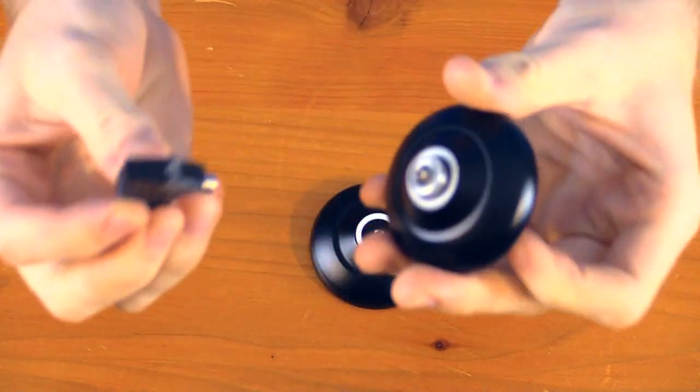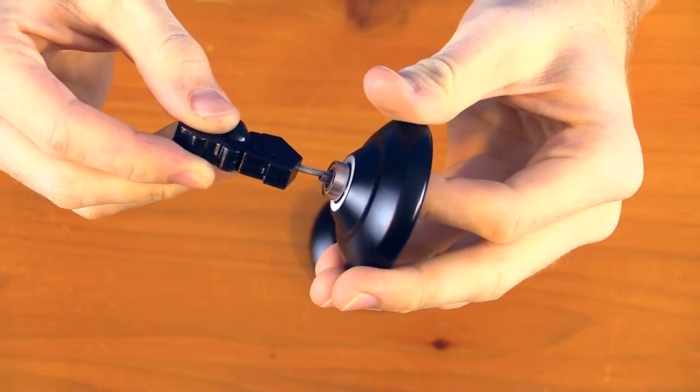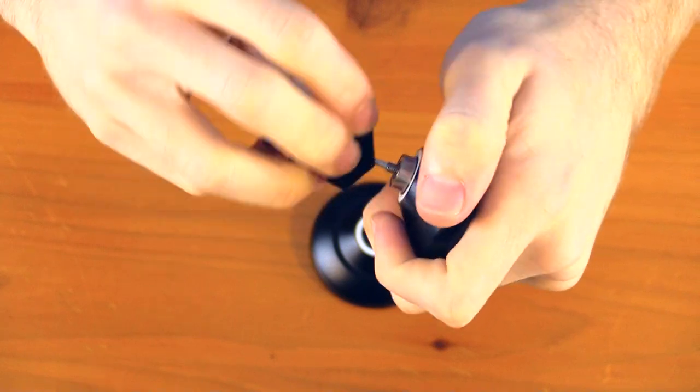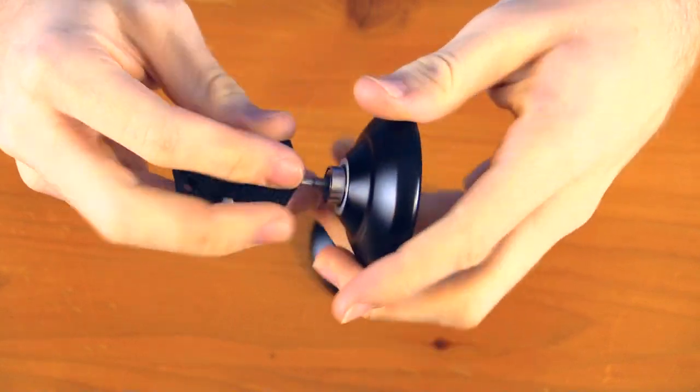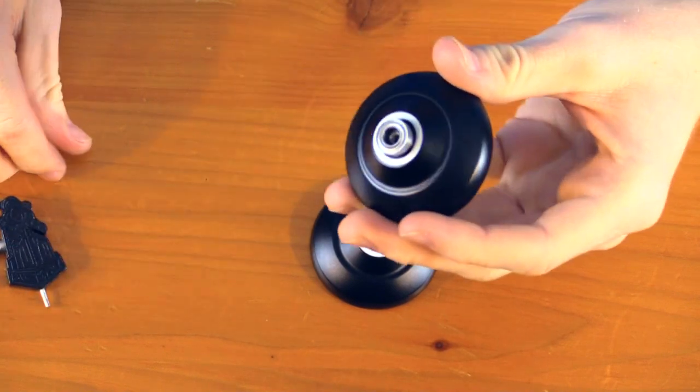The first thing you want to do is take the axle removal tool on the multi-tool, and you're going to slide it into the axle and rotate it counterclockwise to take this axle out. This step isn't necessary, but it does make it a lot easier.